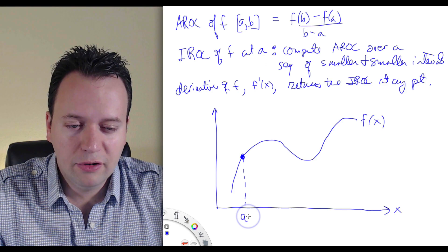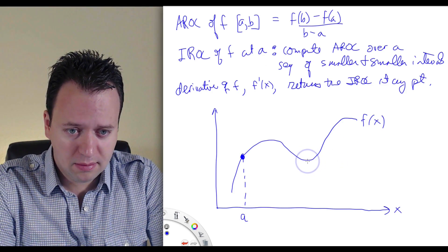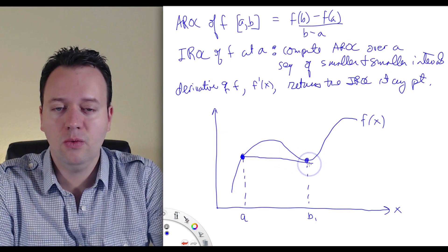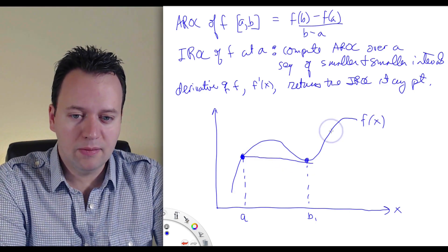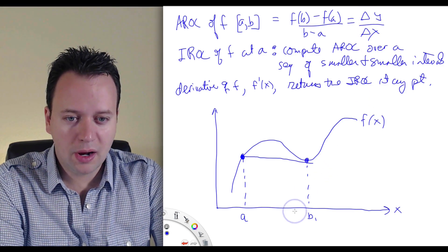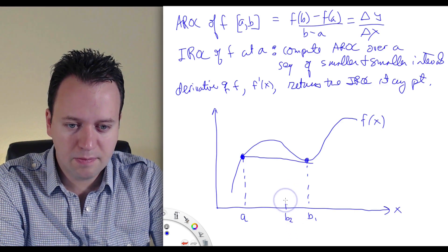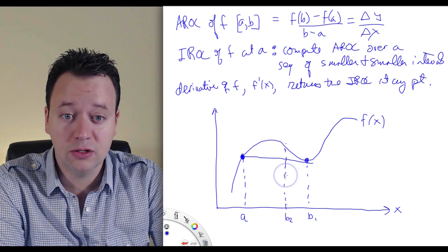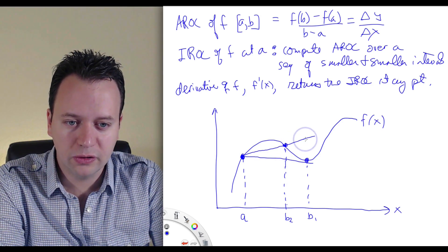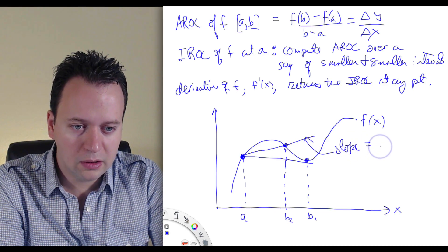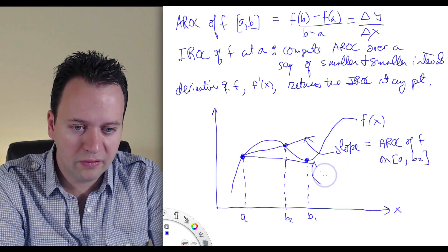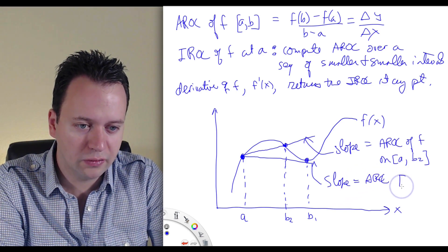When we compute the average rate of change, we can start by asking: what's the average rate of change between a and b1? The average rate of change between a and b1 will be the slope of that line, because it's the change in y divided by the change in x — literally delta y over delta x. Now let's try a b value that's a little bit closer, maybe b2. The average rate of change between a and b2 is the slope of that line. So the slope equals the average rate of change of f on the interval a to b2, whereas the slope of this other line equals the average rate of change on the interval a to b1.